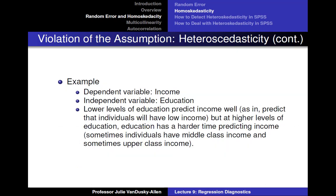For example, imagine we ran a model where education was the independent variable and income was the dependent variable. It could be possible that at lower levels of education, education predicts income well — as in predicts individuals will have low income. But at higher levels of education, education has a harder time predicting income. Sometimes individuals have middle class income and sometimes upper class income. This would lead to a larger variance in the errors at higher levels of education and income.